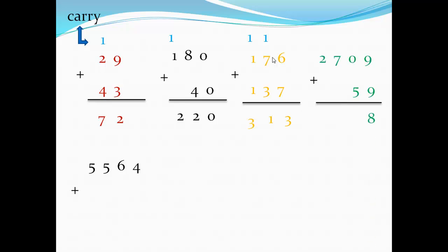One plus one plus one equals three. These problems are in the vertical method. Another one in vertical method: two thousand seven hundred and nine plus fifty-nine. Nine plus nine equals eighteen — write eight and carry one. One plus five equals six; seven plus nothing is seven; two plus nothing is two.